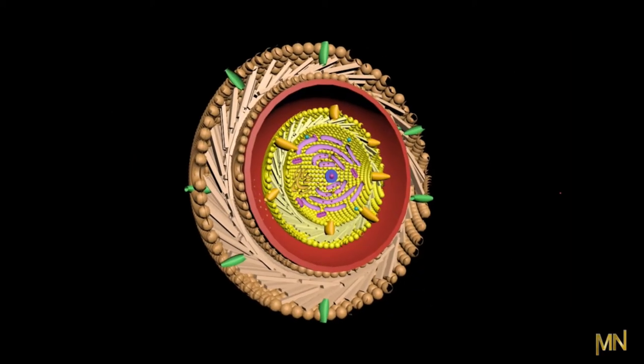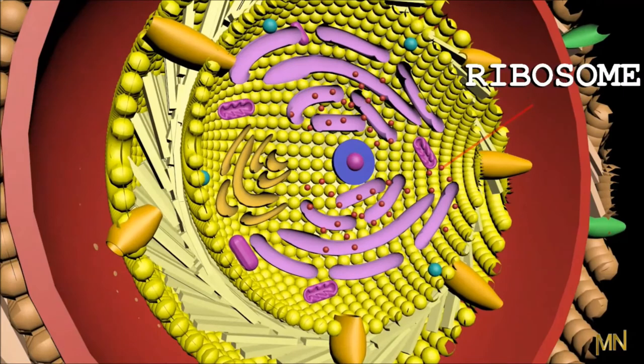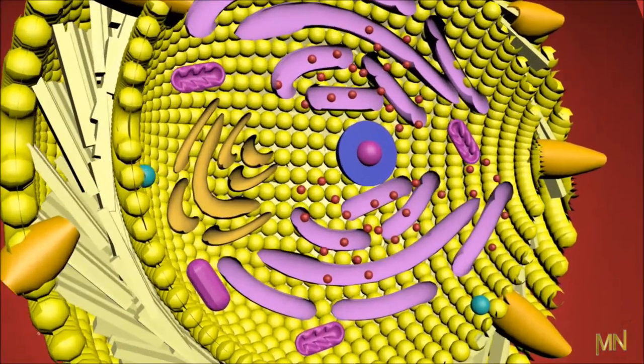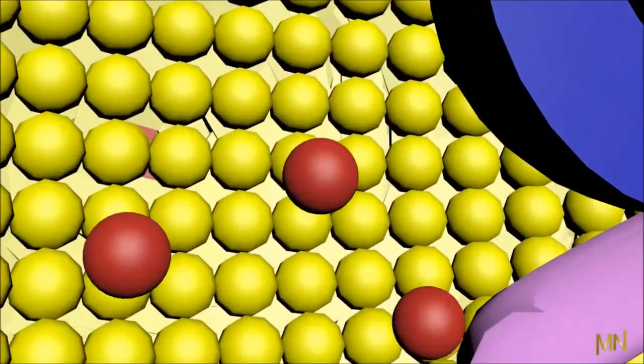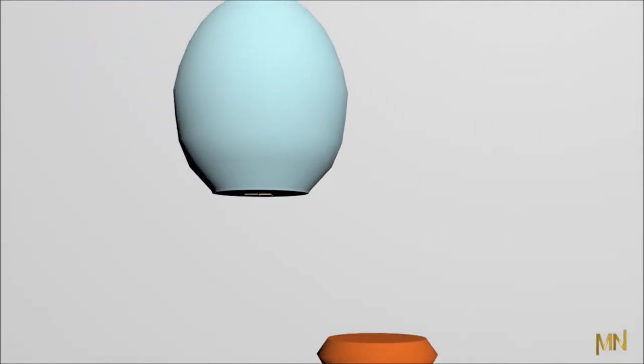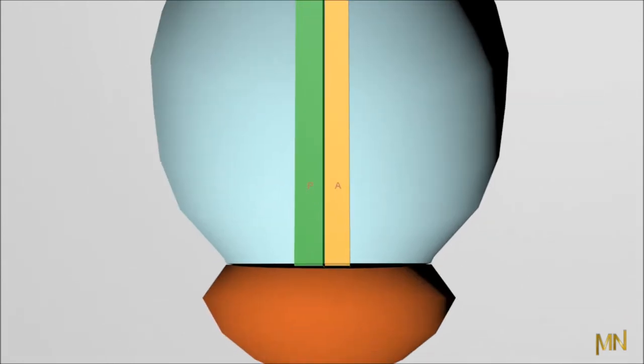The protein synthesis occurs in the ribosomes either on free ribosomes or the ones attached to the endoplasmic reticulum. The bacterial ribosomes consist of 50S and 30S subunits of some TS ribosomes.